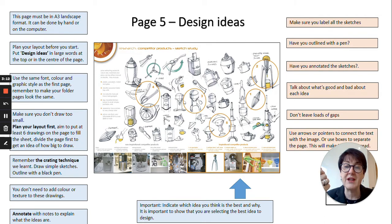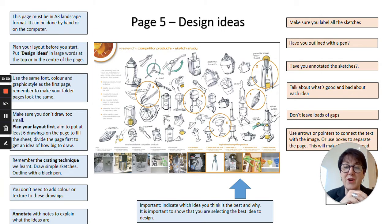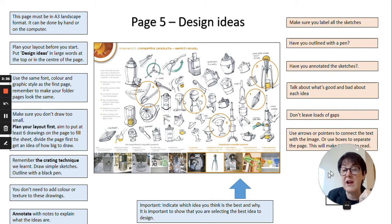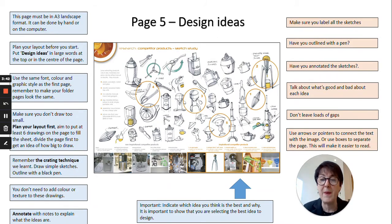Busyness is important - fill this page. Don't fill it with lots of other pictures; for example, on the bottom of this page there are photographs of products - I wouldn't bother with that. Concentrate on your design ideas and your annotation. You can use arrows as pointers, as shown in the bottom right hand corner, to indicate particular things and highlight certain points. Try not to leave huge gaps on this sheet - fill them in as best you can.